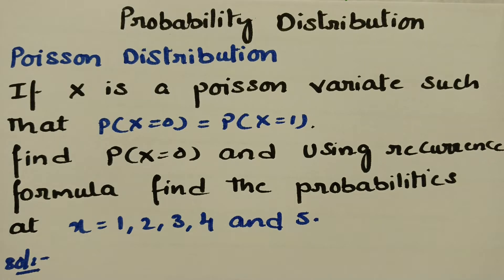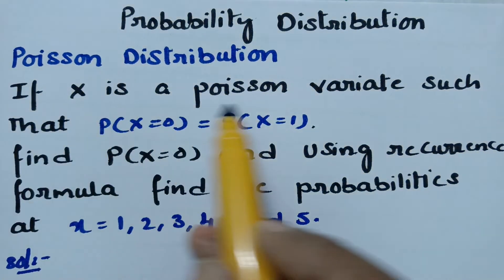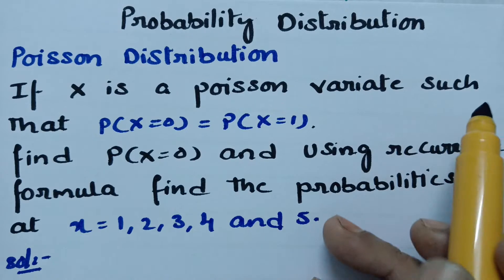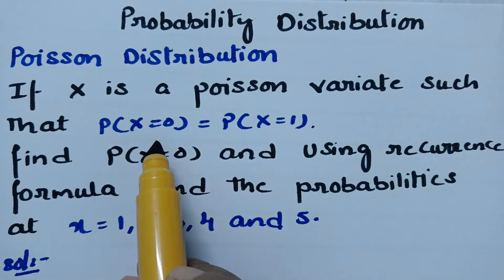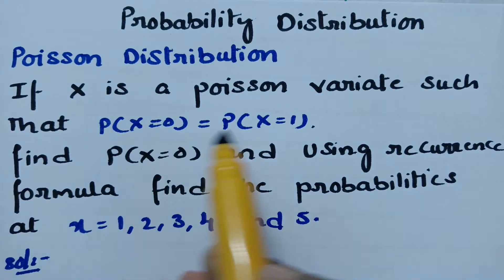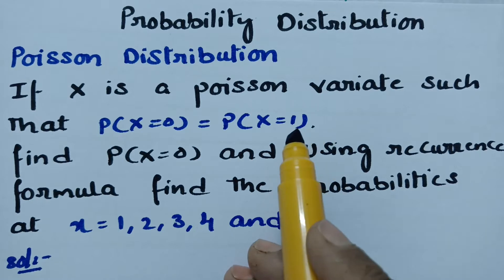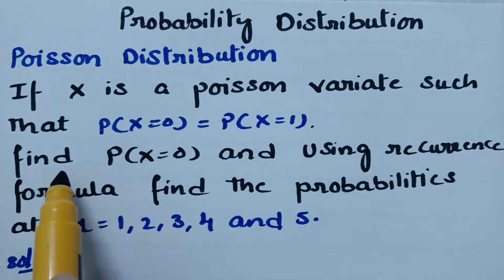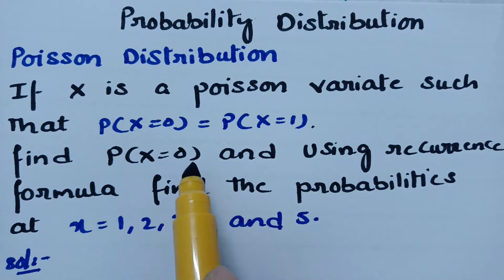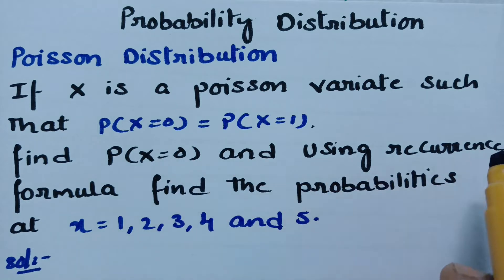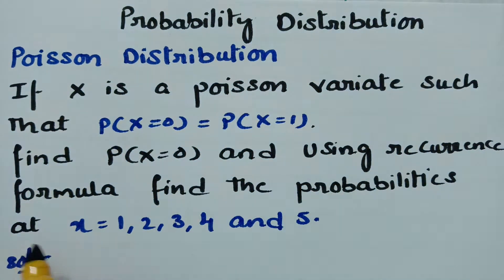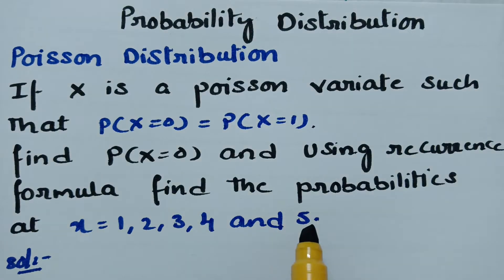Today's video is on Poisson distribution. The problem is: if X is a Poisson random variable such that the probability of X equals 0 is equal to the probability of X equals 1, we have to find the probability of X equals 0, and using the recurrence formula, find the probabilities for X equals 1, 2, 3, 4, and 5.